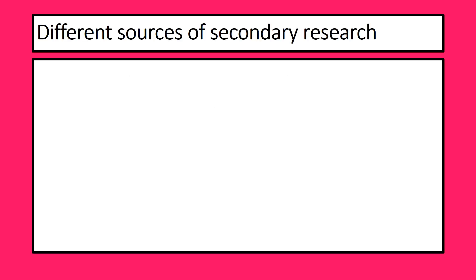There are different sources of secondary research. The first one is the census, which every decade has the government asking how many people live in a country, how old you are, are you married, how many people live in your household, what religion you are, how many cars you have — and this is freely available on the internet. Businesses are able to see how many people live in a particular area and what age they are, giving rough ideas about how many people will be in their target market. The census is free, always a bit out of date, but has really good statistical significance because so many people fill it in.